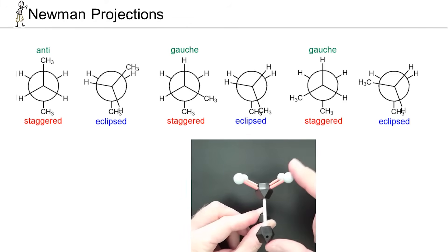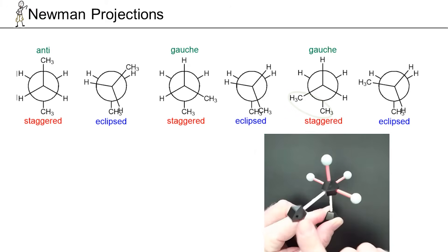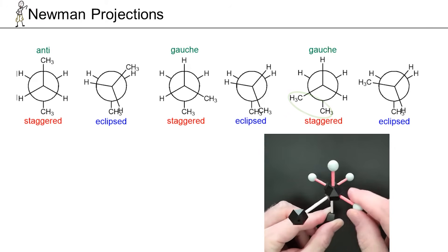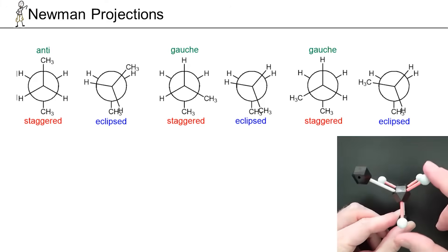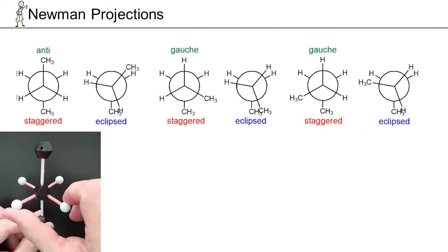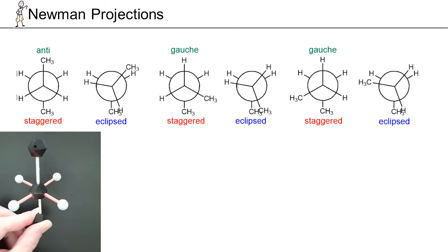Let's rotate it another 60 degrees — now we're at another staggered conformation, and yet again we have another gauche interaction between the methyl groups. Rotate it another 60 degrees and we're back to another eclipsed conformation — not as bad as the last one, equivalent in energy to the first one we showed. And then finally, rotating it back another 60 degrees gets us back to our lowest energy, most stable conformation: the anti-conformation, a special staggered conformation. This is the understanding you need — it's helpful if you see it in a model, and hopefully this helps. But let's draw some pictures.